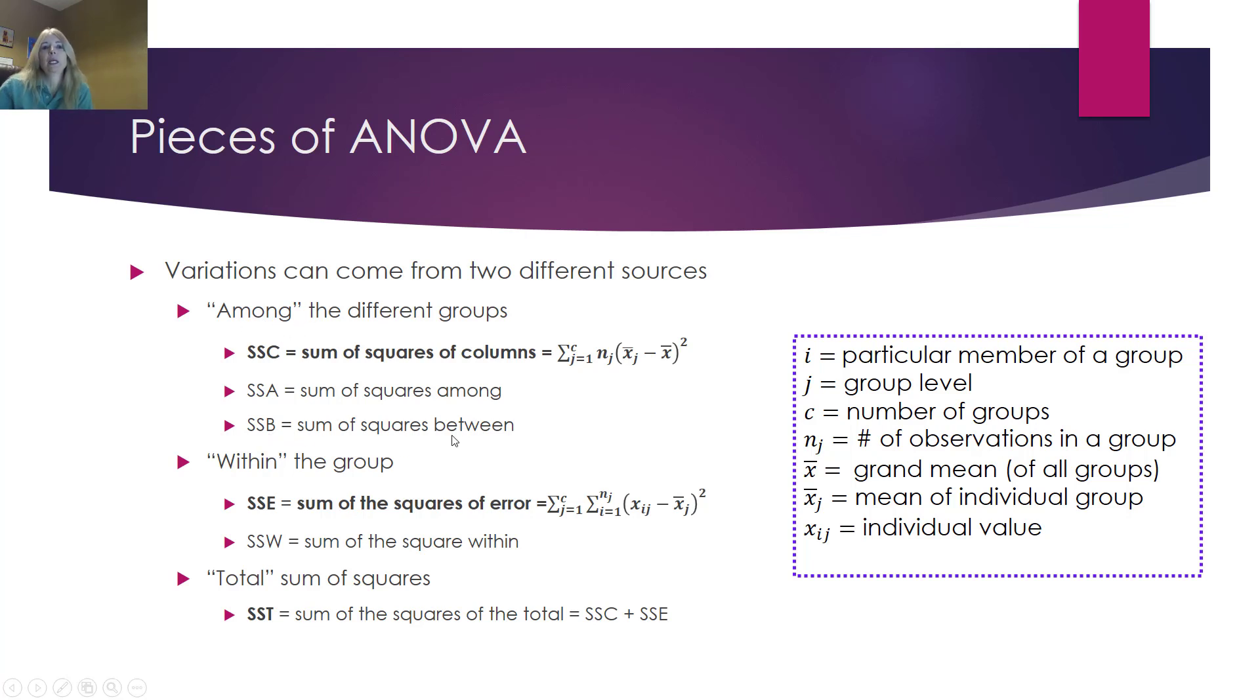Within the group, sum of the squares of the error, or sum of the squares within. Excel actually calls this error. And then the total sum of the squares is just totaling these. So you can see what's going on in the sum of the squares among the different groups, is we're looking at going through each group. So notice j is the group level, and then going through each group.